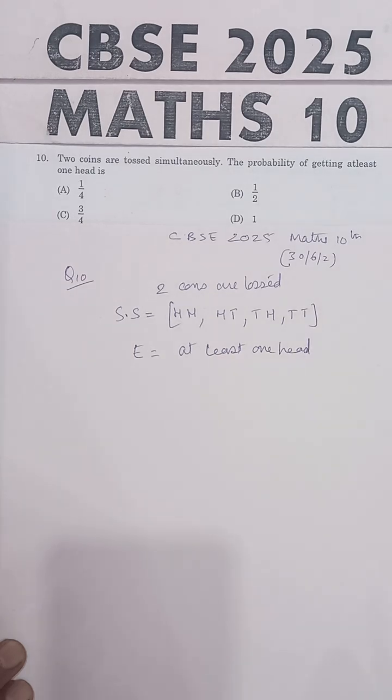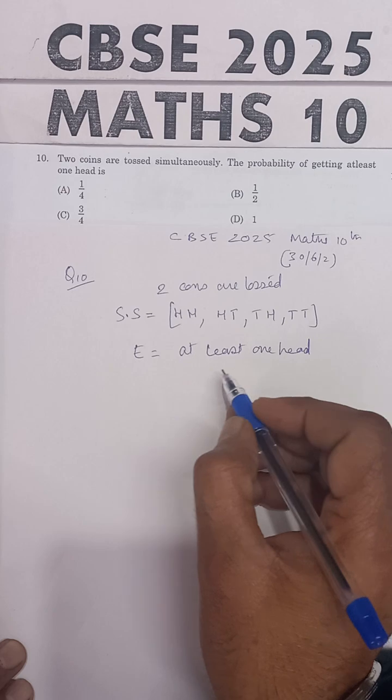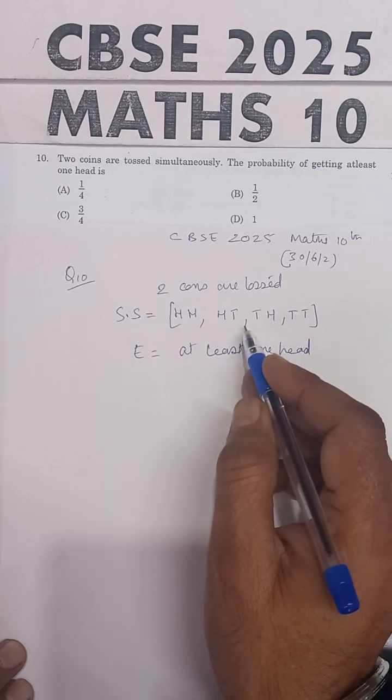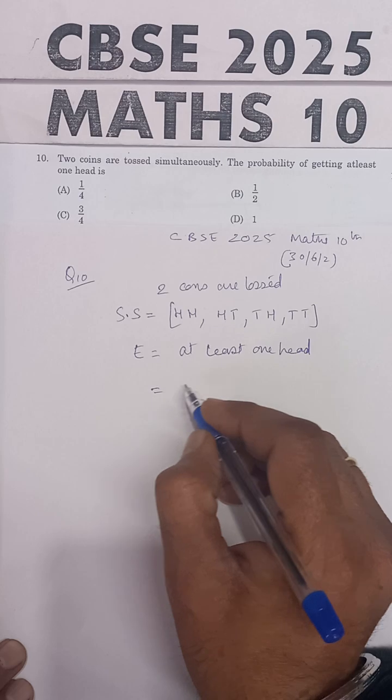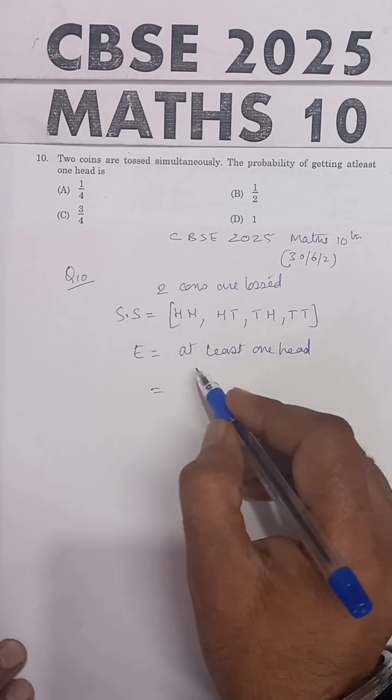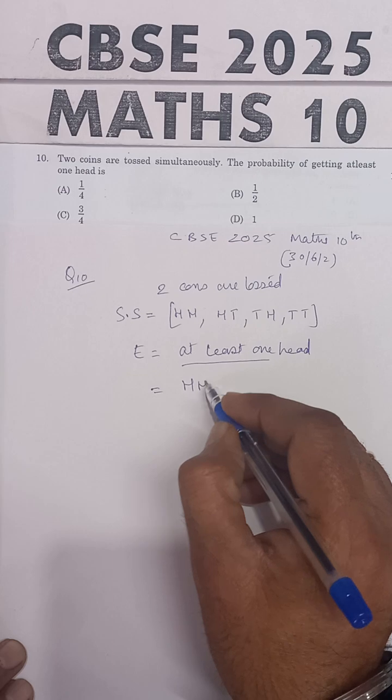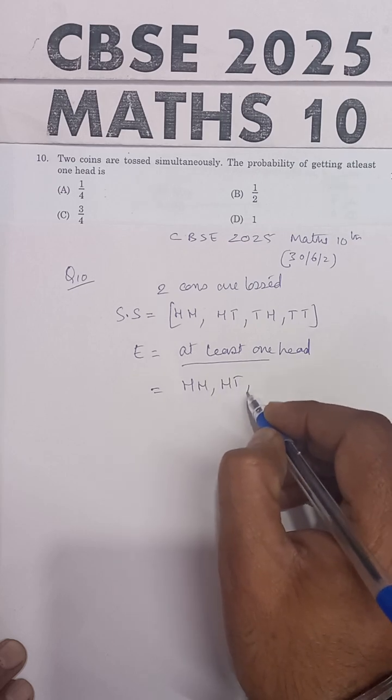You can get one head or you can get two heads. At least one head means you can have one head or two heads also. So the list of all possibilities which are favorable to this case are HH, HT, and TH.